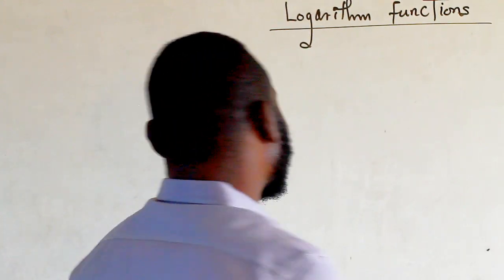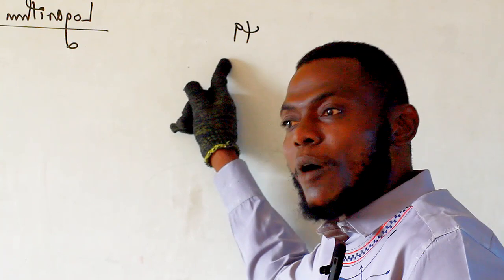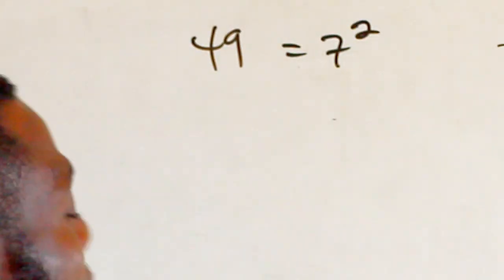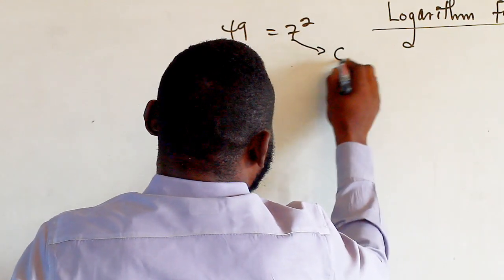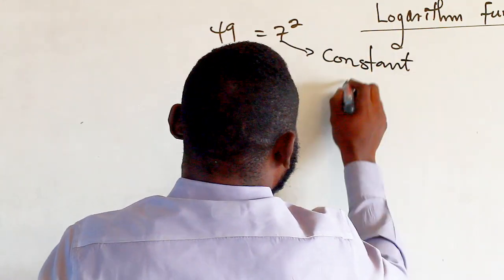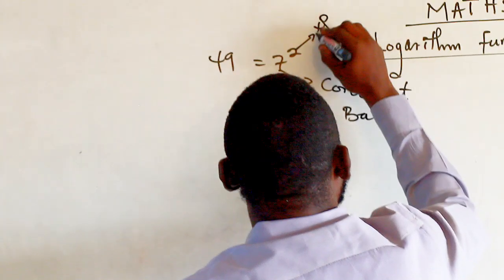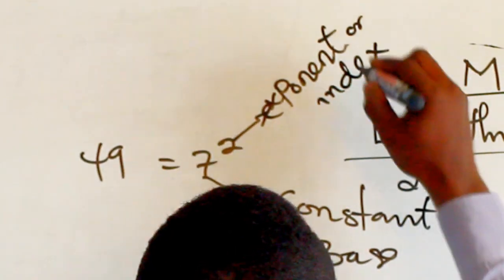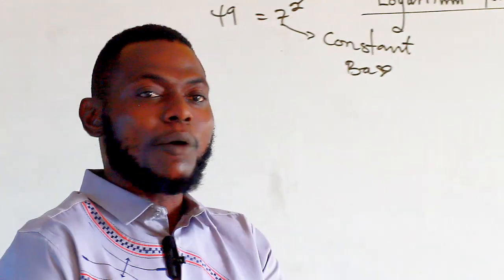For example, if we have 49, we can write the index form of 49 as 7 raised to the power of 2, where 7 is the constant, and 2 is the exponent — also called the index or the power.